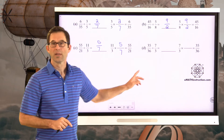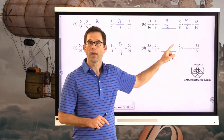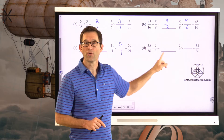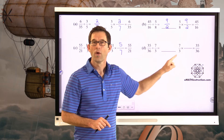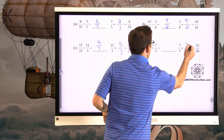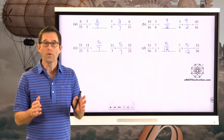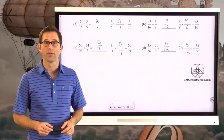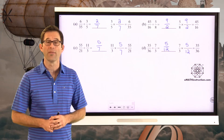In letter D, I'm dividing 35 thirty-sixths by seven-thirds. What do I have to multiply seven-thirds by to get 35 thirty-sixths? Seven times 5 is 35, and 3 times 12 is 36. So the answer is five-twelfths. If you know how to multiply two fractions together, you can often figure out the quotient of two fractions by thinking about it that way.